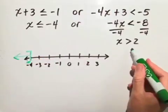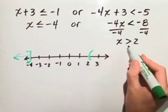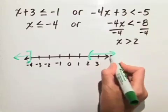Or, x is greater than 2. We start at positive 2 with the parentheses because we have a strict inequality, there's no equal sign, and we draw our arrow to the right.